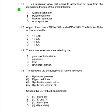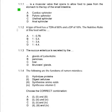Question 1.1.1: Is a muscular valve that opens to allow food to pass from the stomach to the top of the small intestine? This question asks about the muscular valve that controls the flow of food from the stomach to the small intestine. Think of it like a door that opens and closes to regulate food passage. Answer B: Pyloric sphincter.